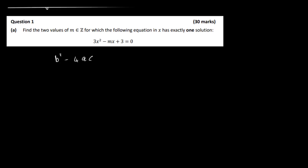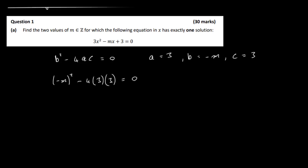Remember our discriminant is b squared minus 4ac, and we want that to equal 0. Our a here is 3, b is minus m, and c is plus 3. So we want b squared, so minus m squared, minus 4 times a, which is 3, multiplied by c, which is 3, and that must equal 0. So all we've got to do is solve for m.